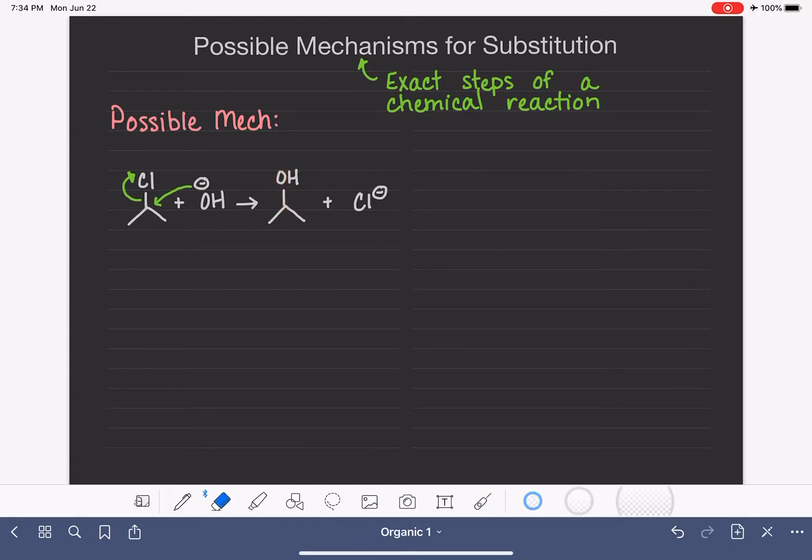This is one possible way in which this reaction can take place. In this mechanism, everything is happening all at once. The oxygen-carbon bond is being formed while the carbon-chlorine bond is being broken. So this is a simultaneous series of steps that happen all at the same time.